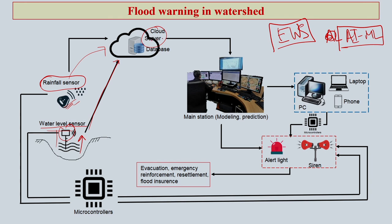From the server, the information will go to the main station where a person or team will continuously monitor that data, and then utilize those sensor inputs through modeling to come up with early warning or prediction of an event.